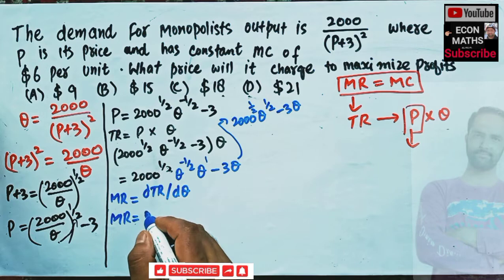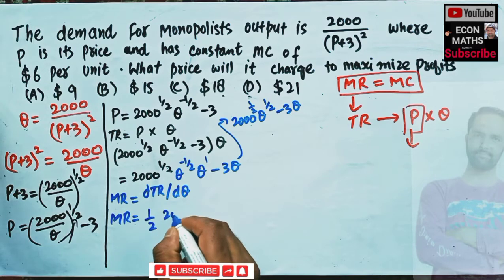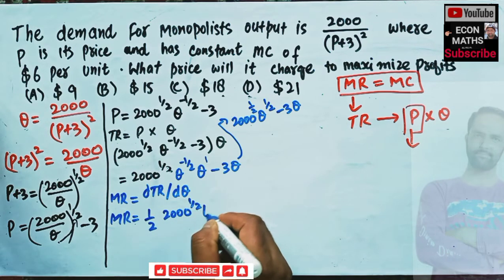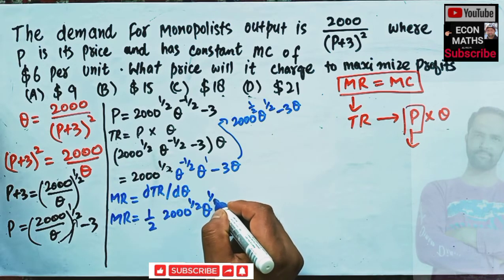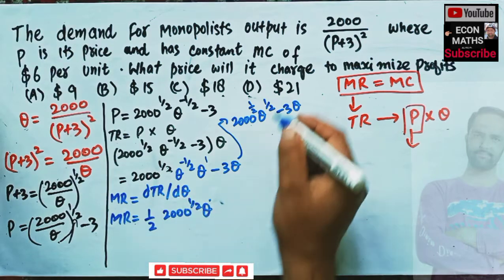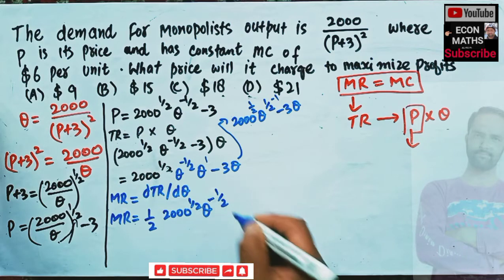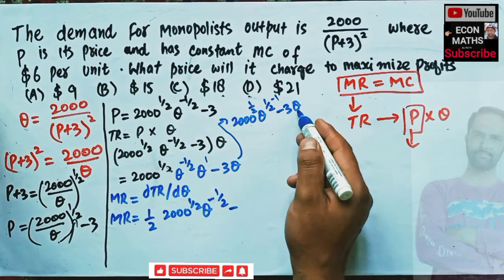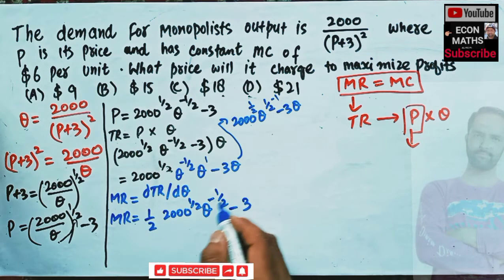The derivative gives us MR = (1/2) · 2000^(1/2) · Q^(1/2 − 1) − 3, which simplifies to MR = (1/2) · 2000^(1/2) · Q^(−1/2) − 3. The derivative of the −3Q term is simply −3. This is our marginal revenue function.